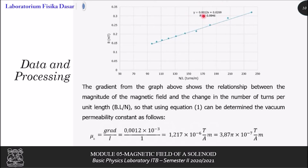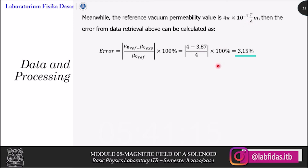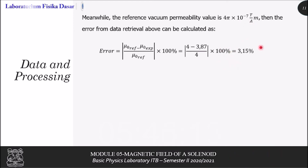The gradient from the graph shows the relationship between the magnitude of the magnetic field and the change in number of turns per unit length of solenoid. By using equation 1 from the basic theory, we can determine the vacuum permeability constant. We calculate the error compared to the reference vacuum permeability value of 4π × 10⁻⁷ tesla meter per ampere, giving an error of 3.15%.